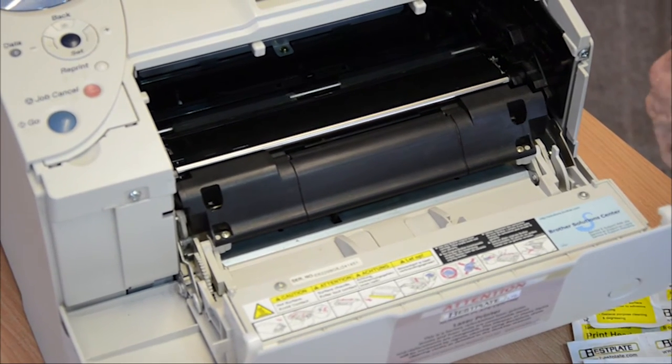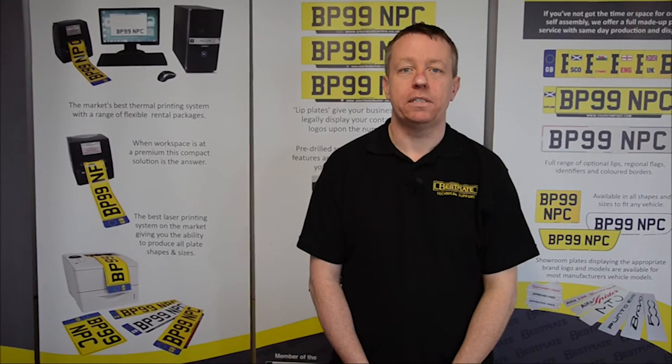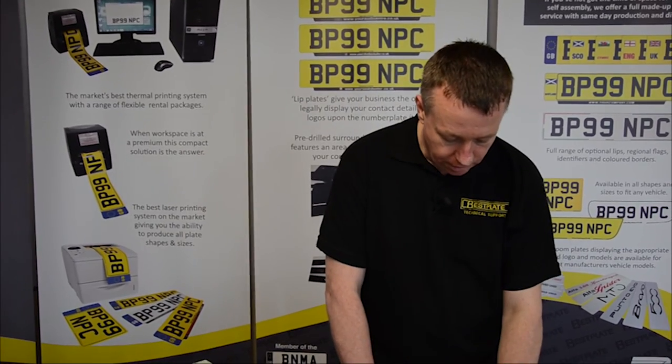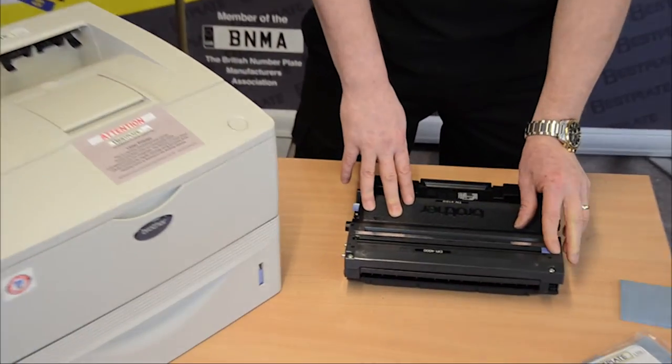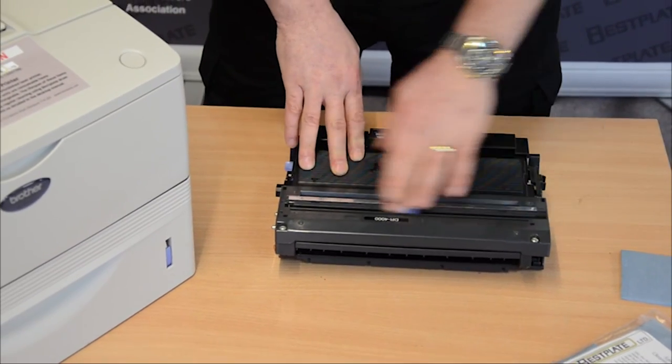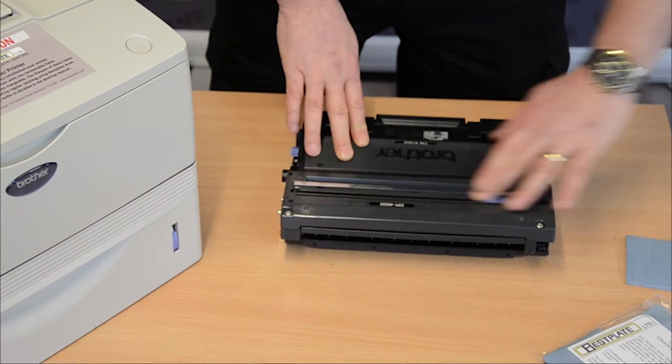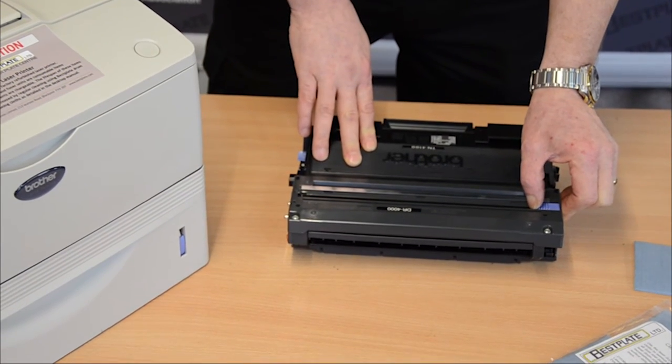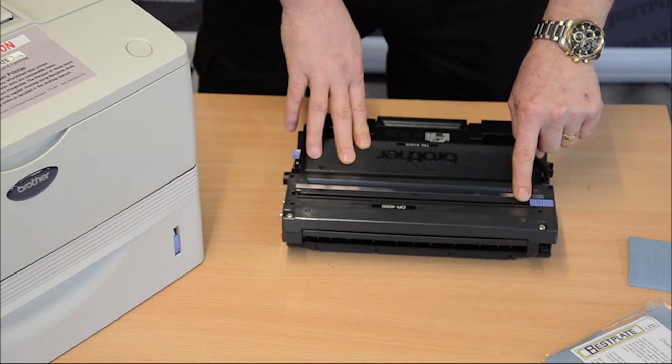Next, we need to clean the drum unit. To clean the drum unit, we need to, first of all, move the blue slider on the top of the unit, out of its locator and slide it across the corona wire five or six times. Then, make sure you lock it back into place. This cleans any dust particles from the wires inside the drum unit.